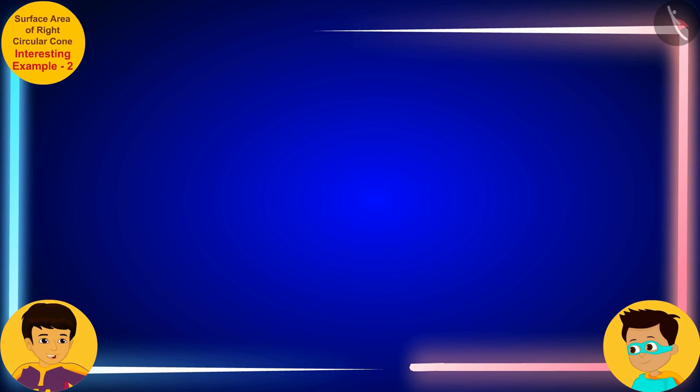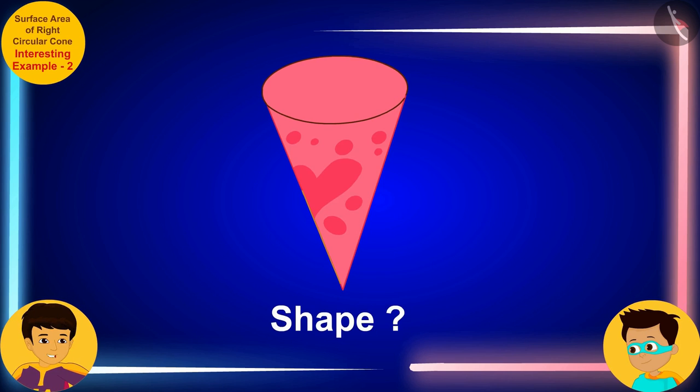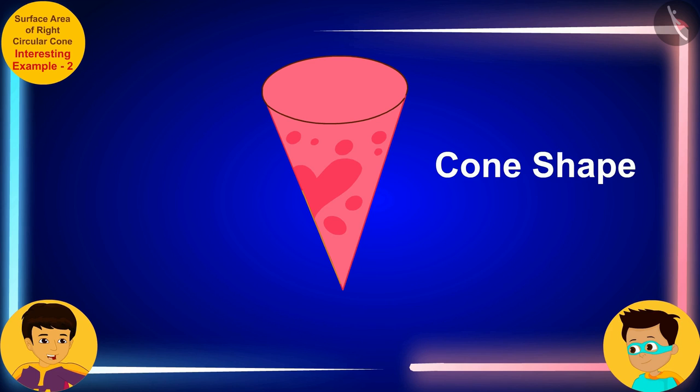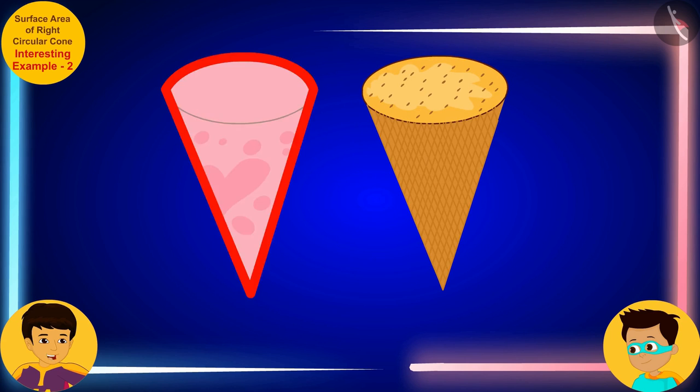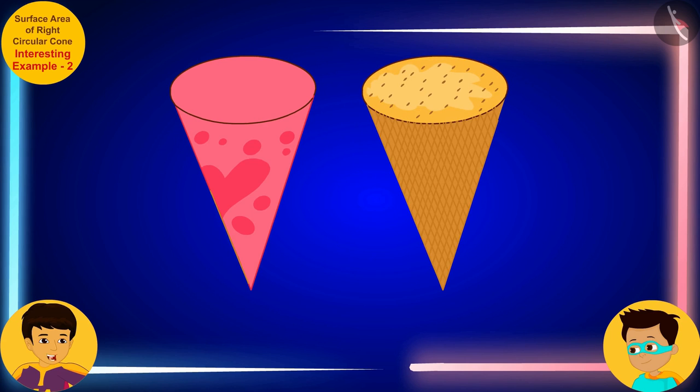Thomas, can you tell me what shape this ice cream is? I guess this ice cream looks like a cone. That's right. And look Thomas, this ice cream is completely covered with this colored paper. This means that the paper used to cover the ice cream will be equal to its total surface area.